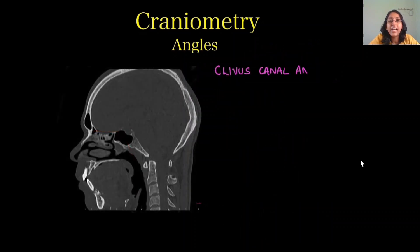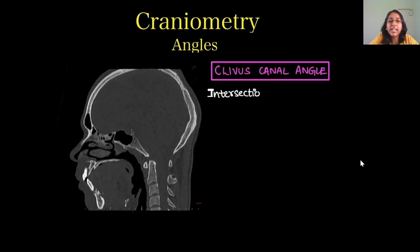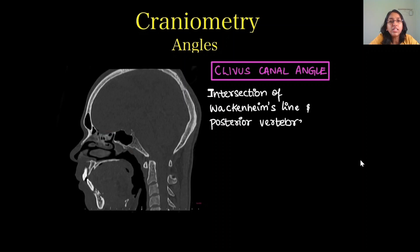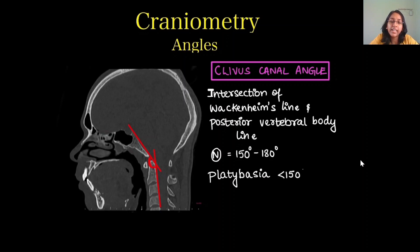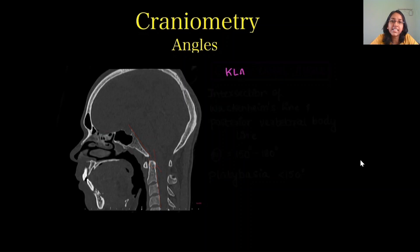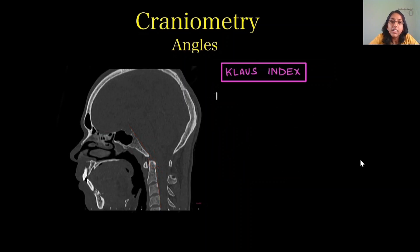Next is the clivus canal angle. It is formed at the intersection of Wackenheim's line and the posterior vertebral body line. Normally it is 150 to 180 degrees. In platybasia it is less than 150 degrees.